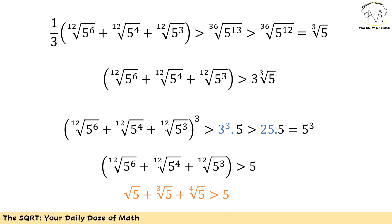We end up with the expression cubed being greater than 3 cubed times 5. Now 3 to the power of 3 is 27, and 27 is greater than 25, so we can replace that with 25 times 5, which equals 5 cubed. Therefore the expression cubed is greater than 5 cubed, which means the expression is greater than 5. So between 5 and radical 5 plus the third root of 5 plus the fourth root of 5, that expression is the larger one.